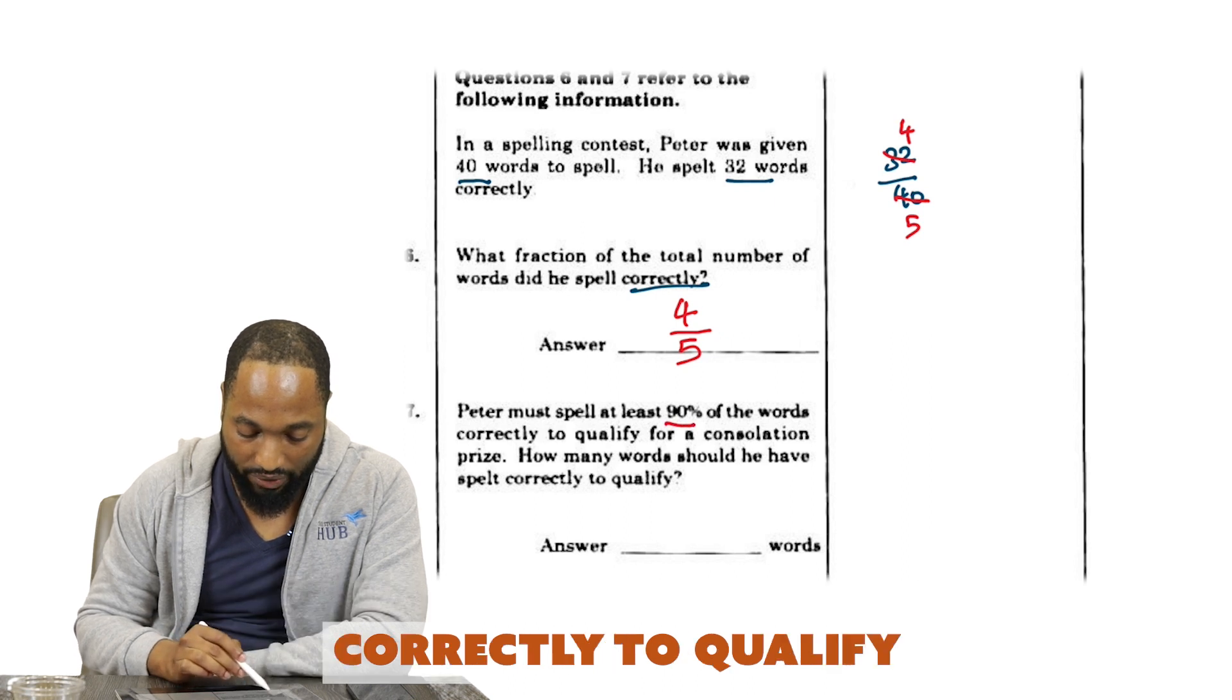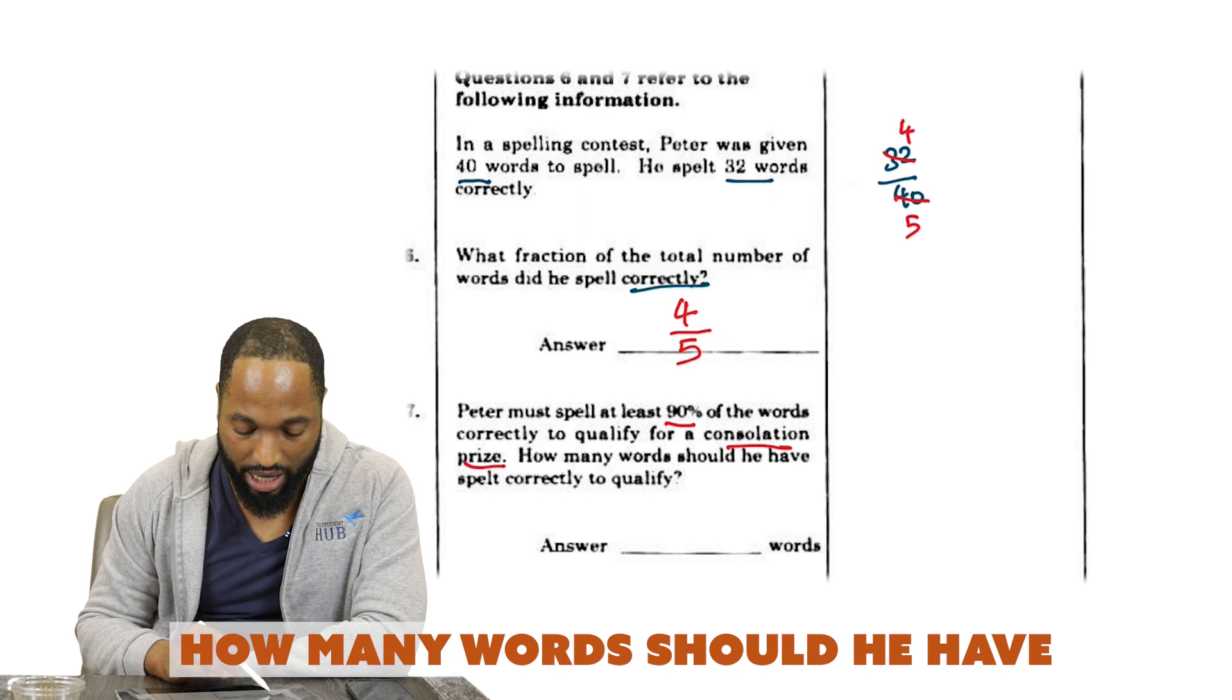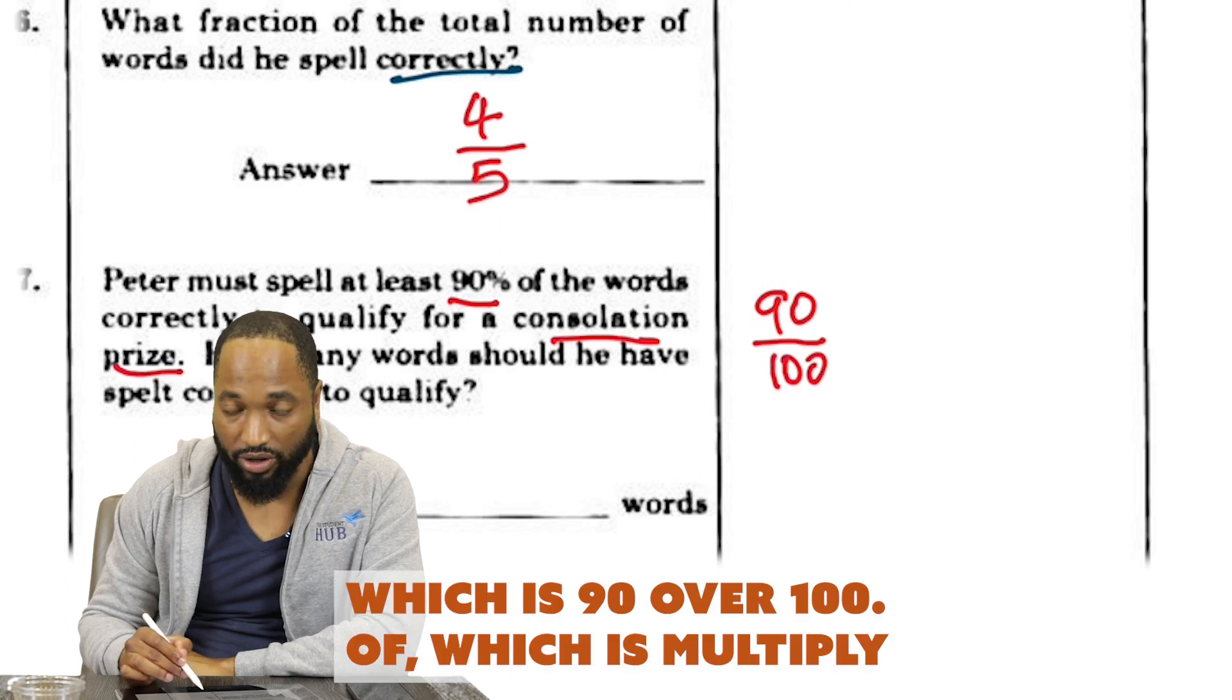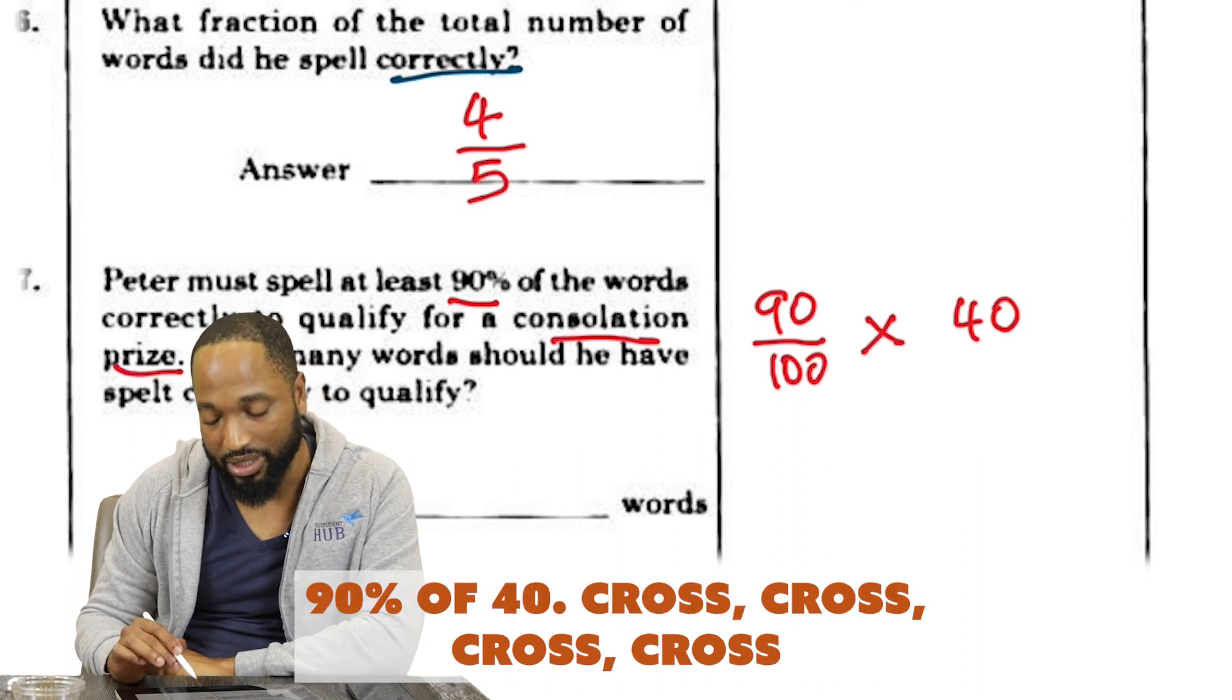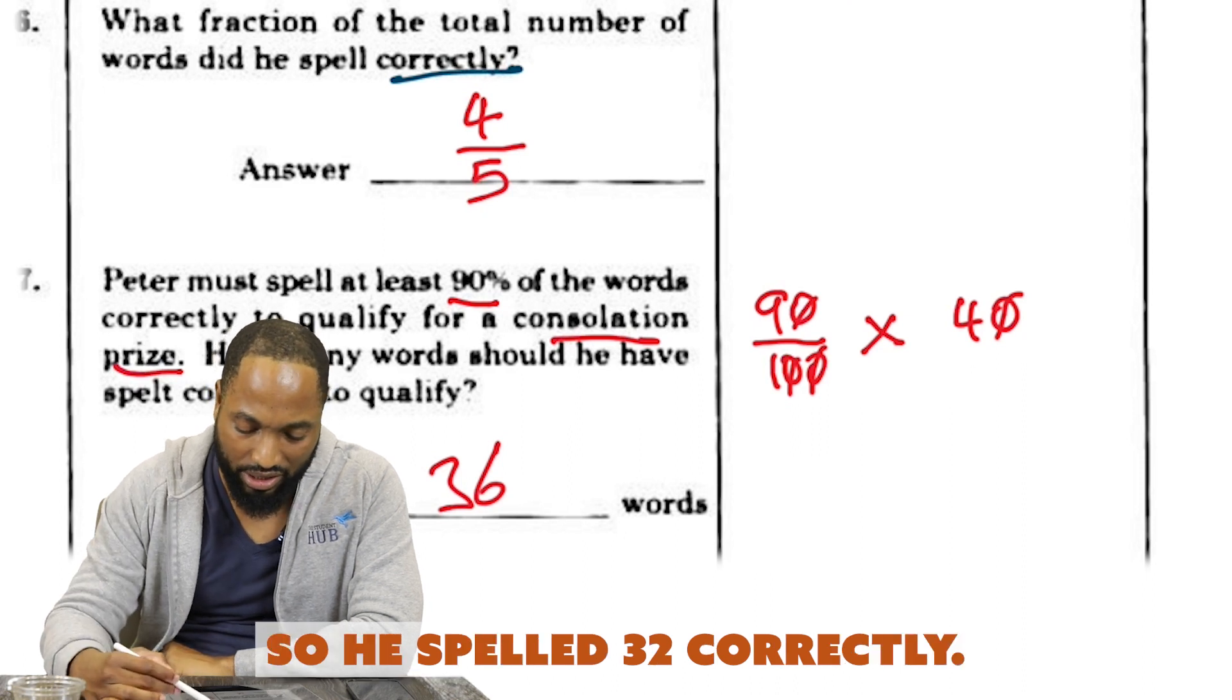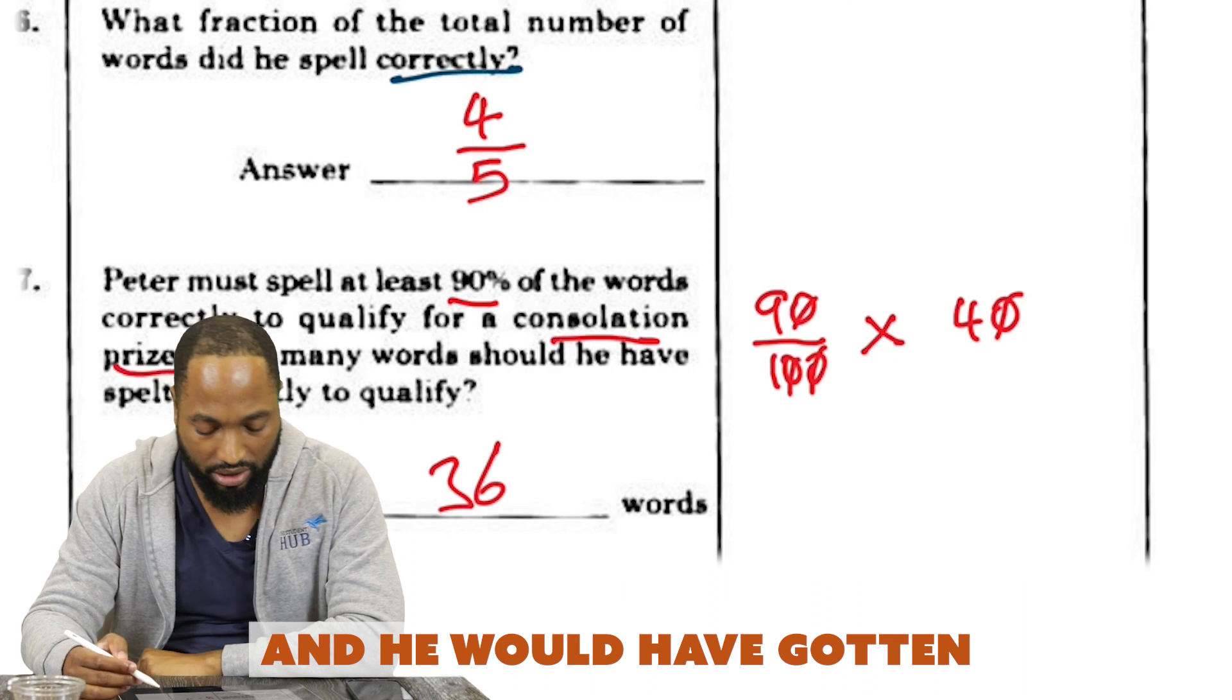Peter must spell at least 90% of the words correctly to qualify for a consolation prize. How many words should he have spelled correctly? He should have spelled 90%, which is 90/100, of 40 words. 90% of 40—cross cross—nine fours are 36 words. So he spelled 32 correctly. He needed four more to go, and he would have gotten his consolation prize. Hard luck, Peter.